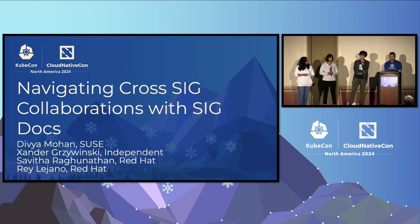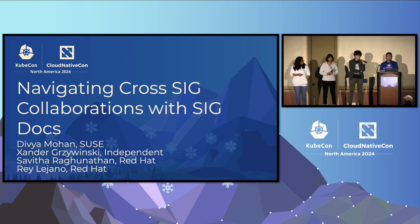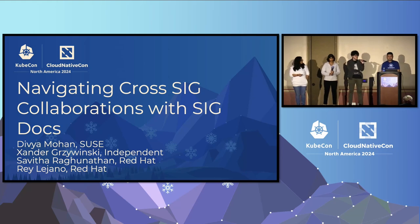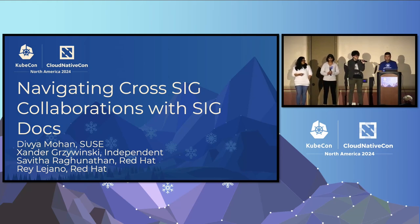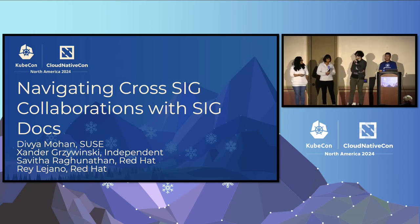I'm Zandri Drabinski. I'm a tech lead with SIG Docs. In the past, I did a fair bit of work with SIG Release as well — I was the 1.27 release lead. I also serve on the Kubernetes Code of Conduct Committee, and for employment, I do mostly open source stuff at the moment.